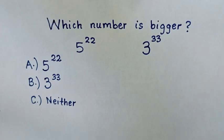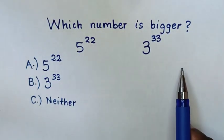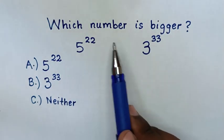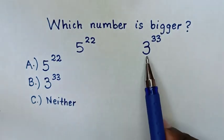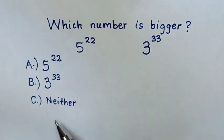Hello! It's a good thing to solve this problem without using a calculator. Which number is bigger? We have 5 to the power of 22 and 3 to the power of 33 by selecting between these answers.